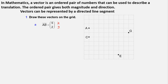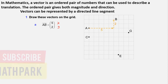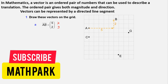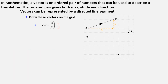So let's draw vector AB. We start with point A, go 5 points towards right and then 2 up. Join AB and this is our vector. Next, draw vector CD (1, -3). We go 1 right from C and then 3 down. Join CD — this is our vector CD.